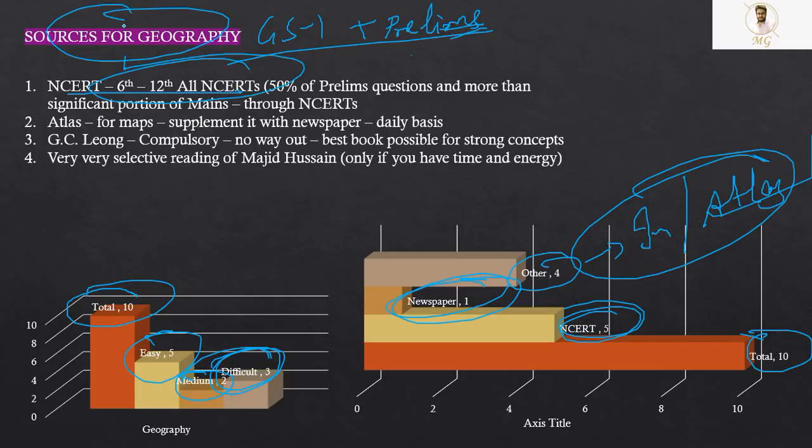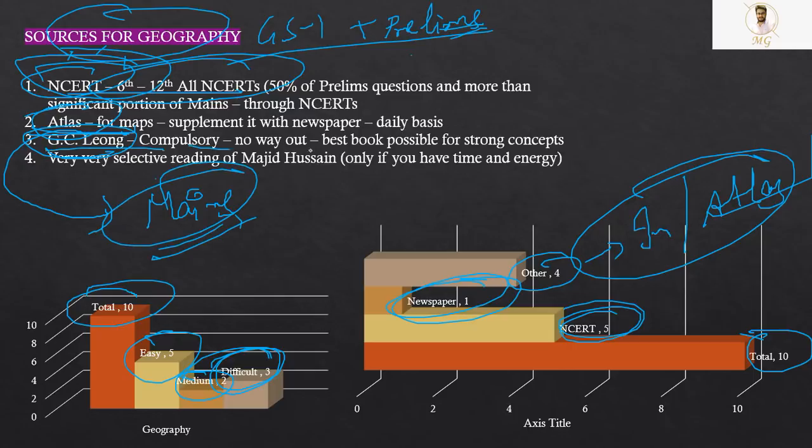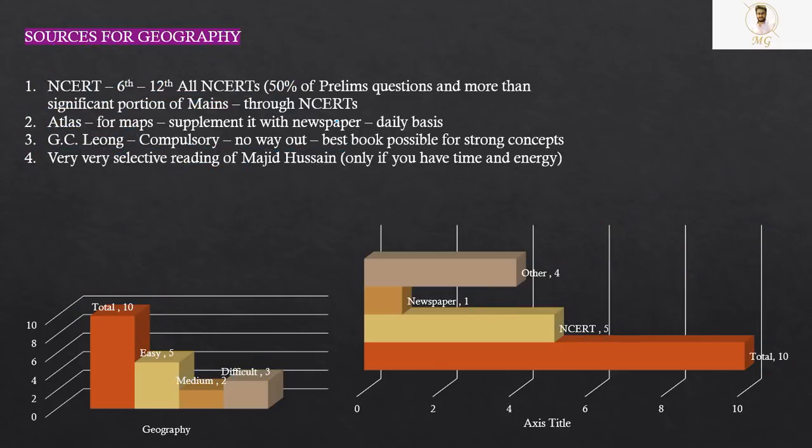If we talk about the sources of geography for GS paper 1 and prelims. If we talk about geography, then NCERT 6 to 12, you have to read all the NCERTs. There is no substitute for that. You have to read it. Supplement NCERTs with Atlas. You have to read that place in Atlas as well. And whatever is given in the newspaper, whatever places you are encountering in newspaper, you have to find them in Atlas as well. Apart from that, GC Leong is compulsory. This time GC Leong had no physical geography question, but in mains, it will be of extreme significance. So GC Leong you have to read. There is no option about it.